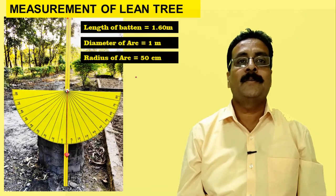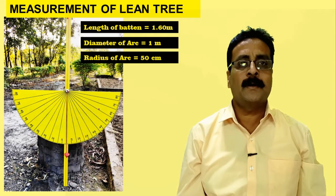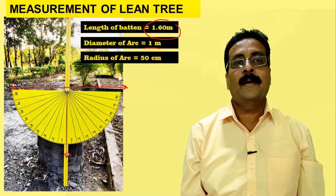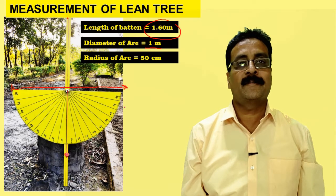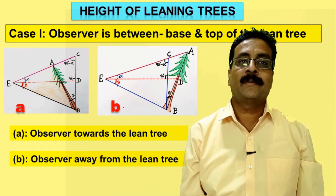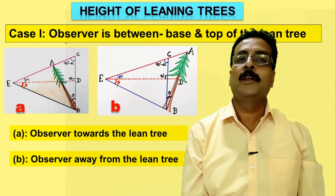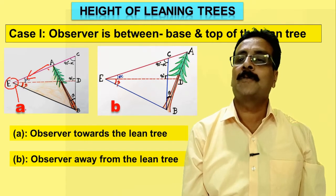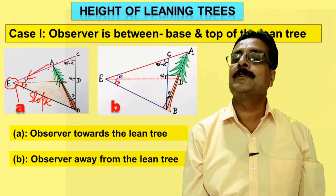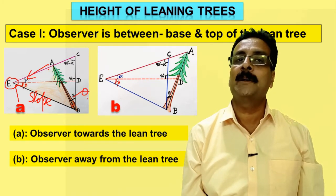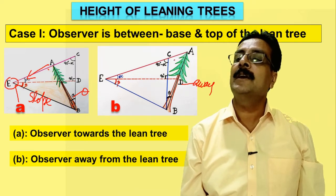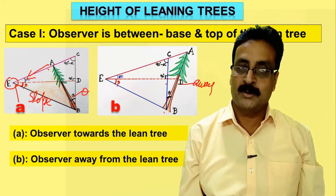Now for the height of leaning trees: Case 1 is when the observer is on the uphill side and the tree is leaning toward the observer on a slope. The lean angle theta is measured with the simple device. The second sub-case is when the tree leans away from the observer; a triangle is constructed with a 90-degree angle to calculate height by trigonometric method.